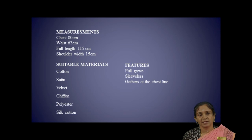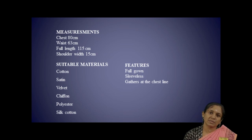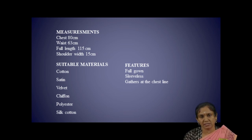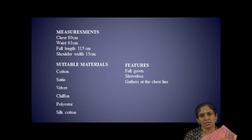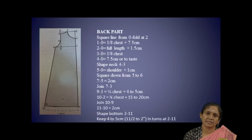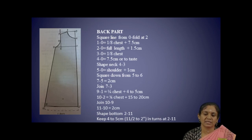For summer season, we mostly prefer cotton material only. The features of the Naiti are: full gown — according to our taste we choose the length of the gown — and then sleeveless with gathers at the chest line. These are the features introduced into the garment. Now we are going to see about the drafting procedure.